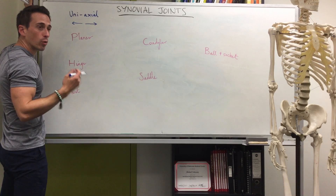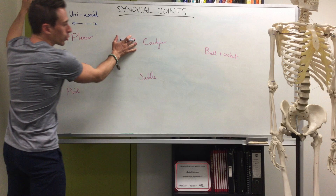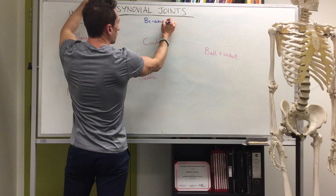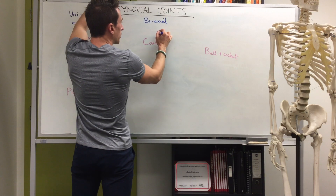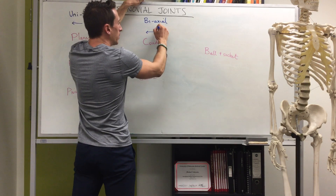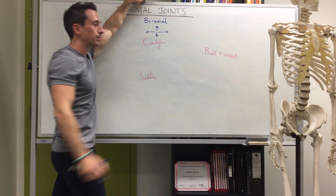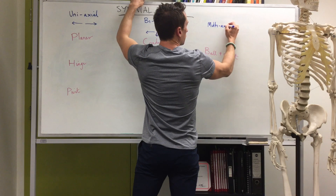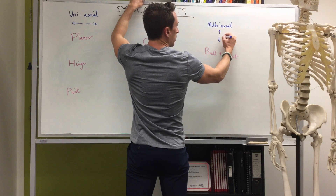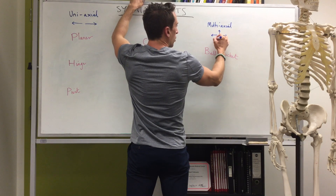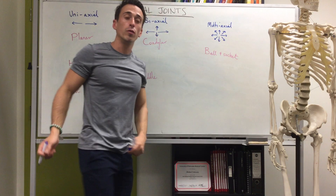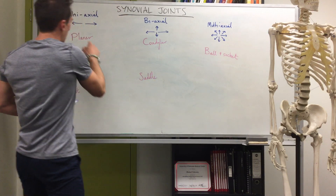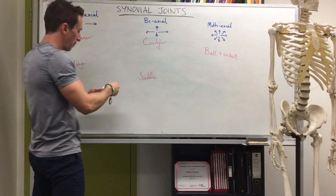Condylar and saddle joints are biaxial — they can move in two planes, for example forward and back and up and down. Ball and socket joints are multiaxial and can move in many directions — up and down, left and right, forward and back, diagonally, and so forth.